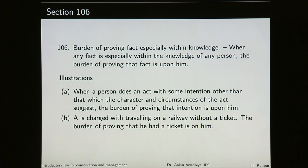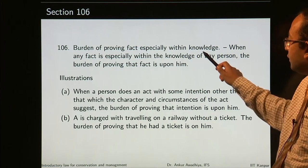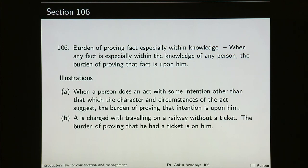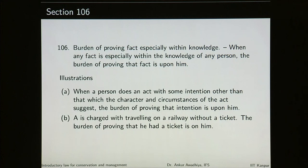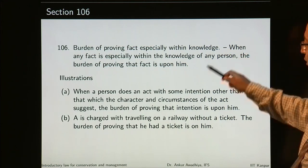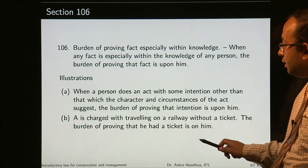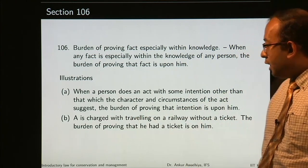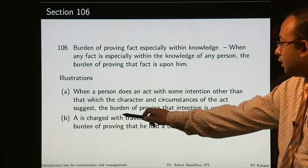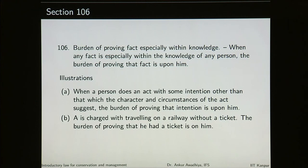Section 106 says burden of proving fact especially within knowledge. When any fact is especially within the knowledge of any person, the burden of proving that fact is upon him, because if there is a certain fact that is within the knowledge of a particular person and nobody else, that person only will have to prove it. For example, A is charged with travelling on a railway without a ticket — the burden of proving that he had a ticket is on him, because it is a fact especially within the knowledge of A.